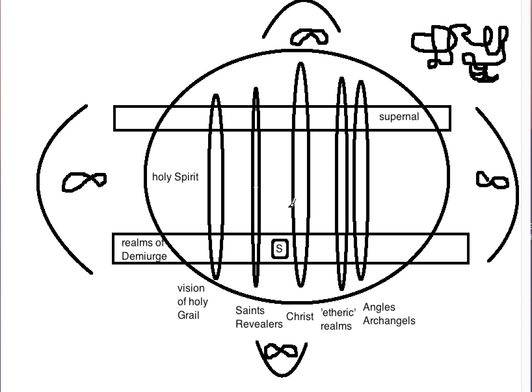And this is my little schema of perhaps the types of help that we might expect. This is the worlds of the demiurge, the realms of the demiurge which are many. This sort of track kind of thing is actually infinitely long, so it's infinite that way and infinite that way. This is the supernal worlds.